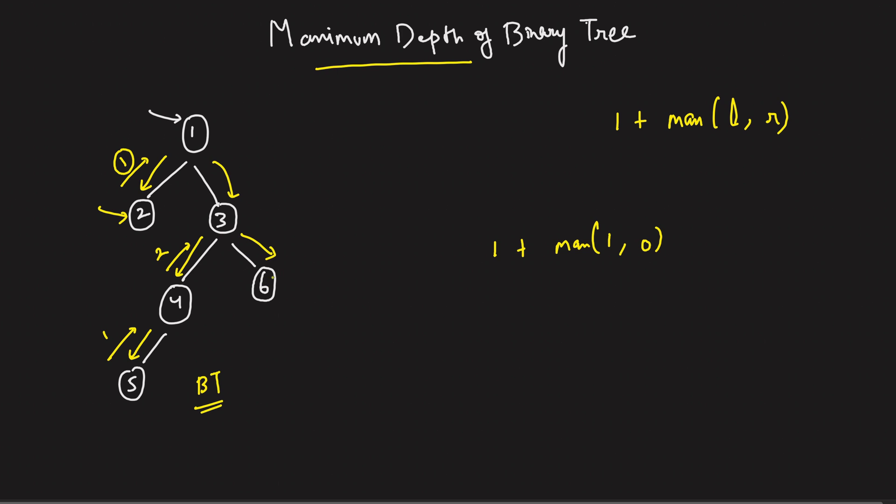Now, when I will come to node 6, for node 6, the answer will be 1 plus max of, for node 6, the left will be 0, the right will be 0. So can I say for node 6, the answer will be 1. Perfect.